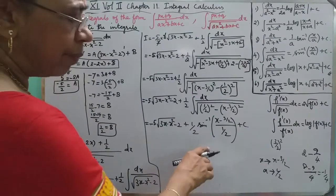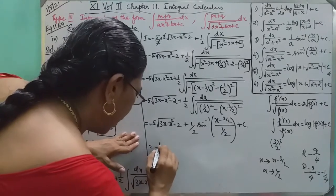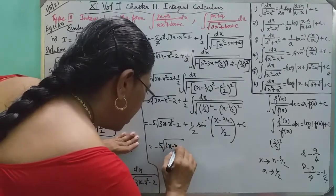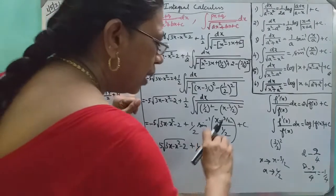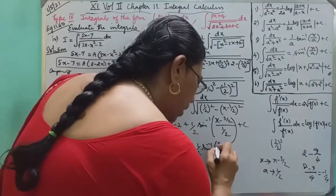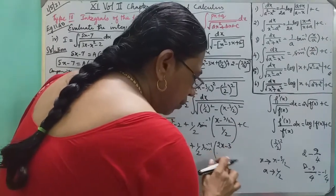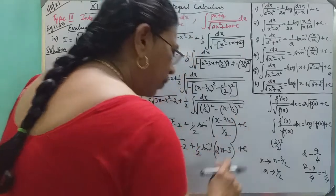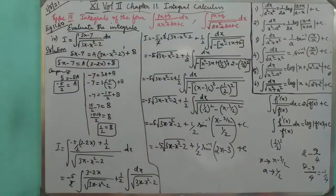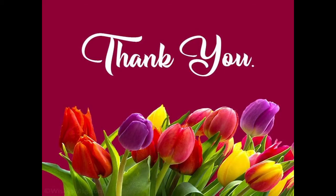Now, by 2, we will eliminate the fraction: x minus 3 by 2, sin inverse of x minus 3 by 2 plus 1 by 2, sin inverse of x minus 3 by 2 plus c.